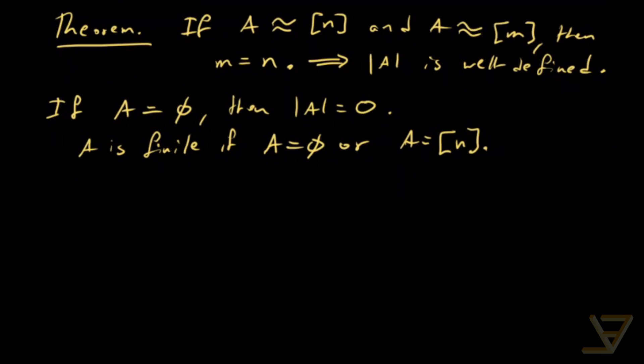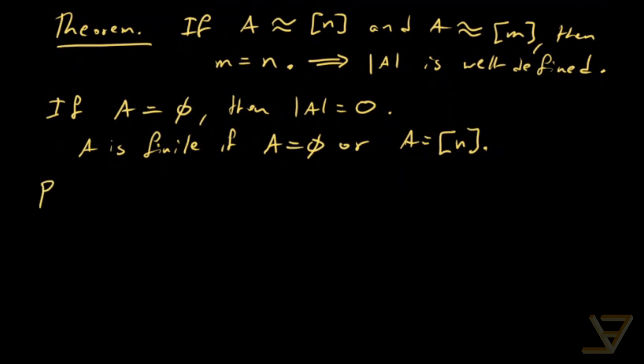Before we move on, I want to mention some properties of equipotence. These are pretty important and they come up in combinatorics and outside of combinatorics quite frequently. So, the first thing is that A is equipotent with itself. We call that reflexive.